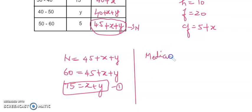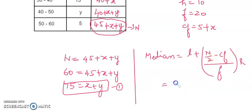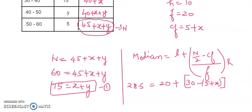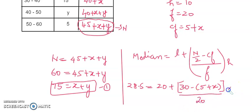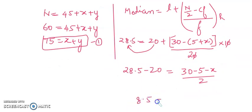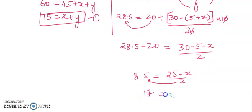From the median formula: median equals L plus (n by 2 minus CF) divided by F multiplied by height. So 28.5 equals 20 plus (30 minus (5 plus x)) divided by 20 multiplied by 10. Simplifying: 28.5 minus 20 equals (25 minus x) divided by 2, giving 8.5 equals (25 minus x) divided by 2. Multiplying both sides by 2: 17 equals 25 minus x.